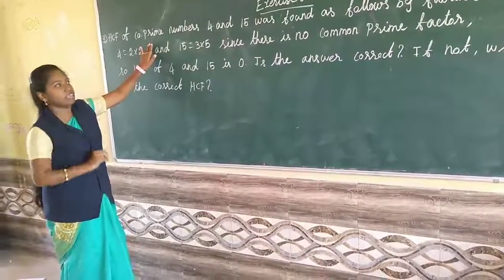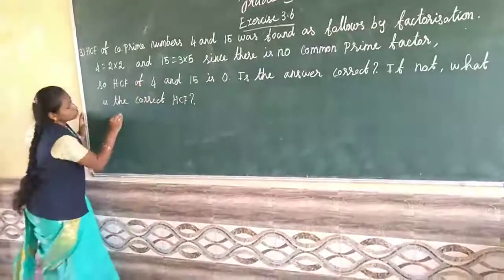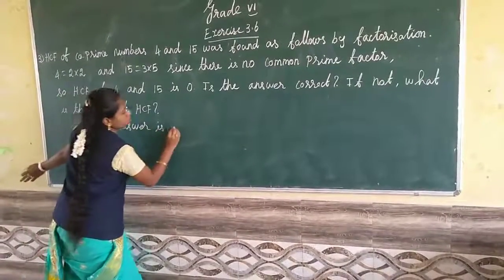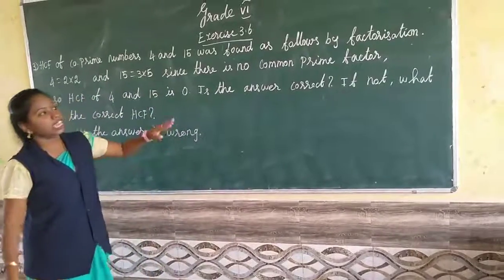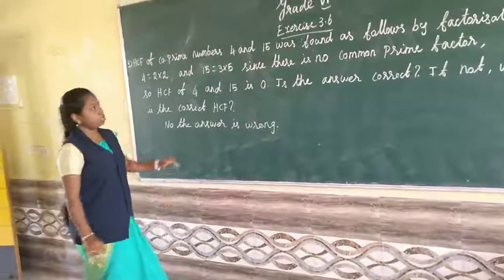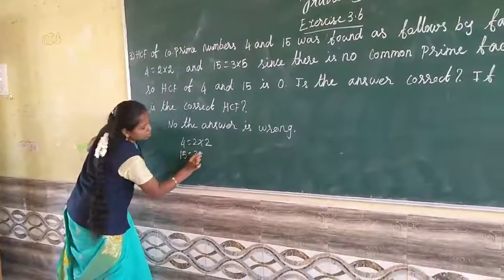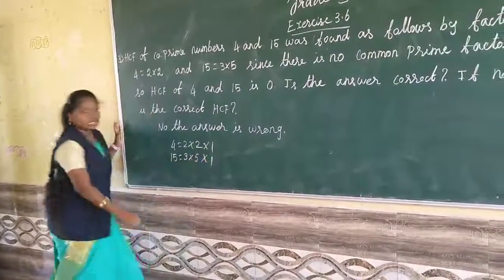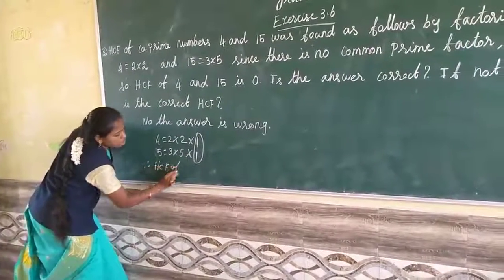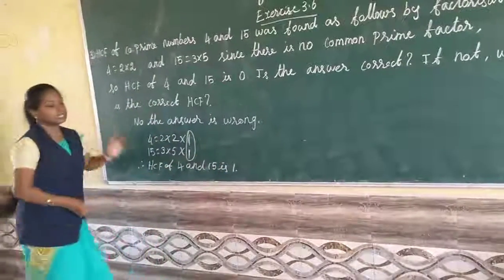So the answer is wrong. Is the answer correct? No, the answer is wrong. If not, what is the correct answer? The correct answer is 1. Exercise 3.6 is over.